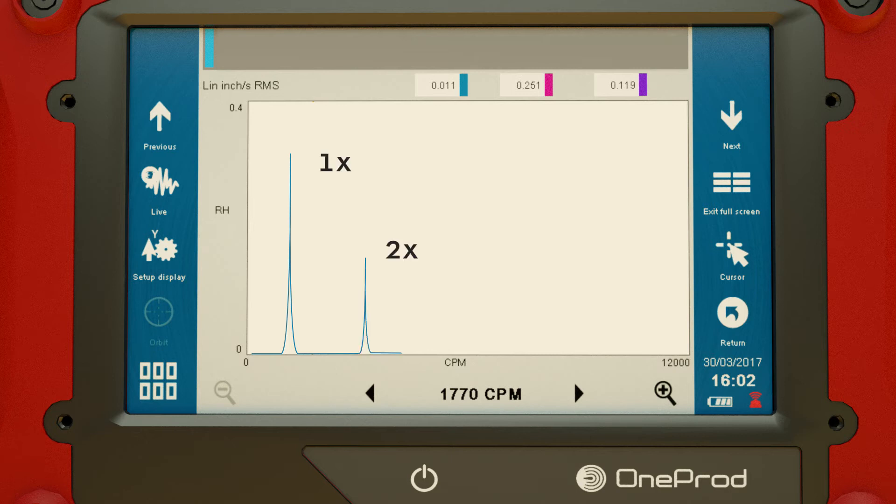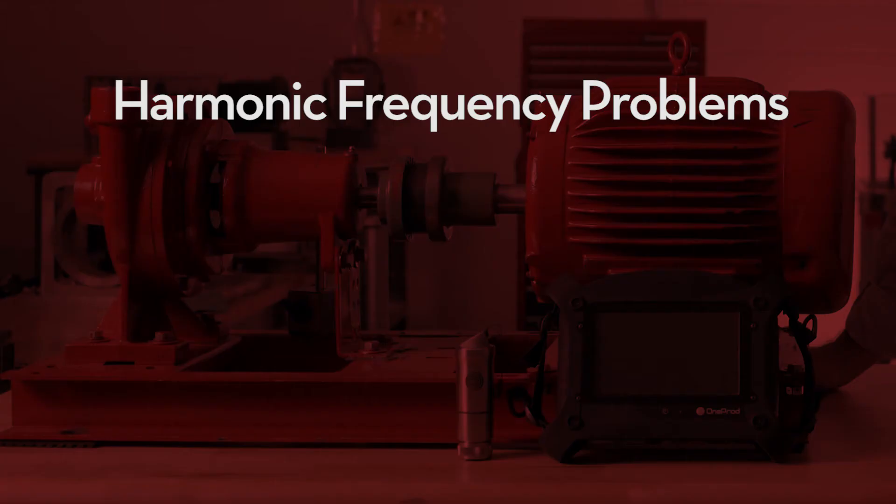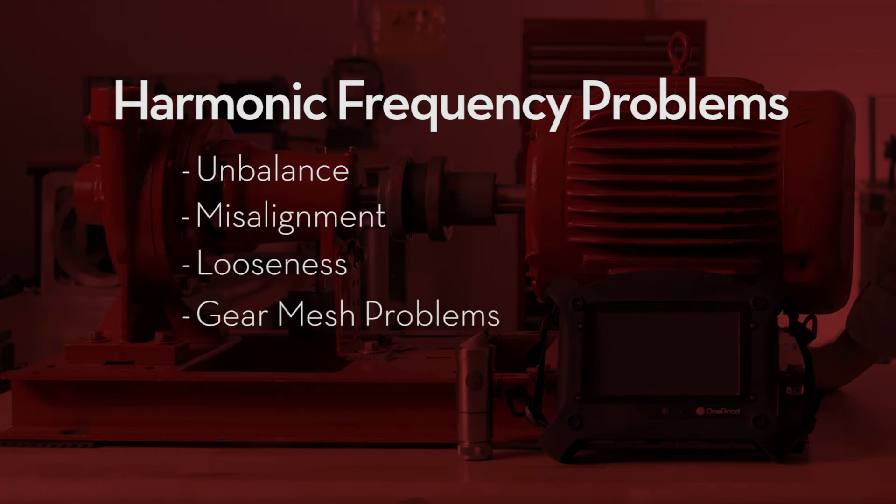1x, or the run speed. 2x, 2 times the run speed. 3x, 4x, etc. The set of problems that display as harmonic frequencies include unbalanced misalignment, looseness, gear mesh problems, fan blade pass, and pump vane pass.